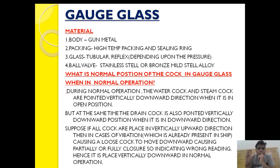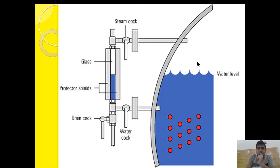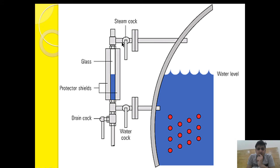The second question asked in MU Class 4 is: what is the normal position of the cock in the gauge glass during normal operation? When the boiler is in normal working condition, what should be the position of the cock and why? As you can see, this is a tubular type gauge glass. There are three cocks — steam cock, water cock, and drain cock — and all three are shown pointing in a vertical downward direction. The steam cock and water cock in vertical downward position are in open condition.